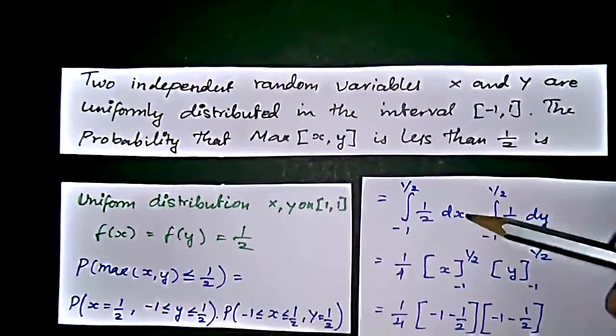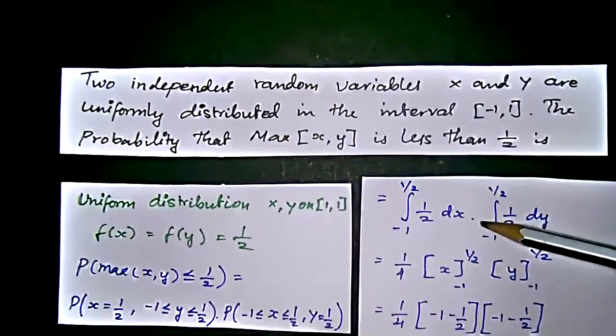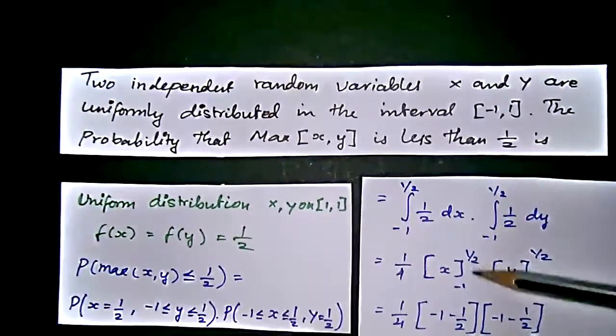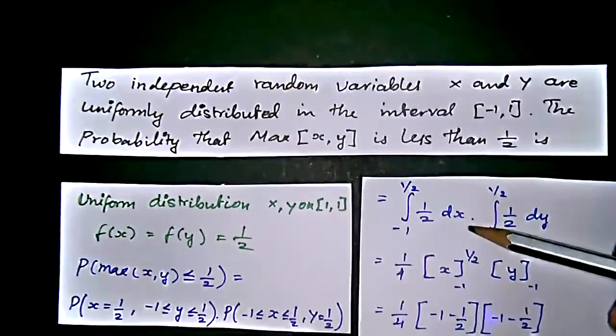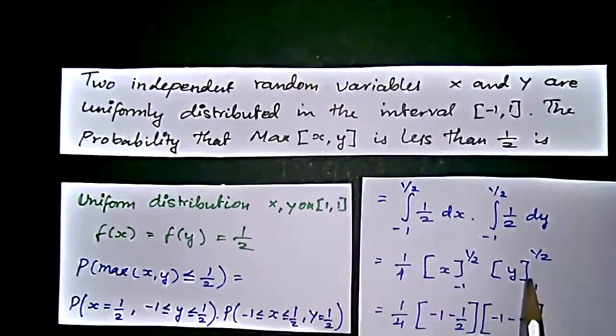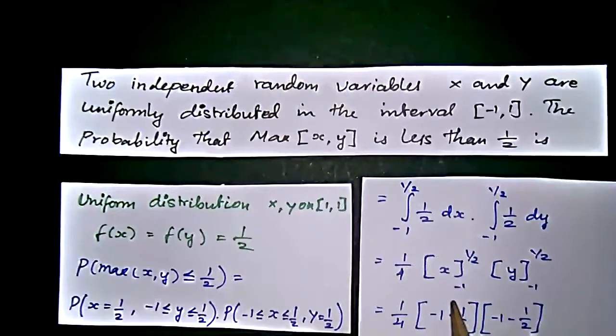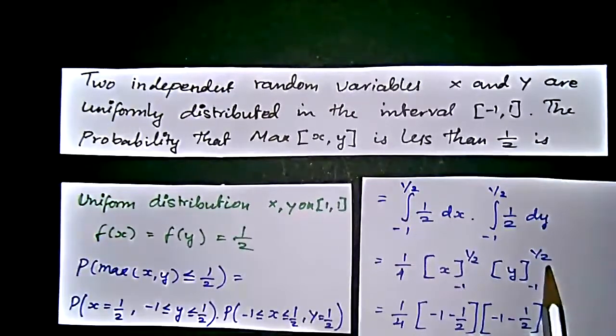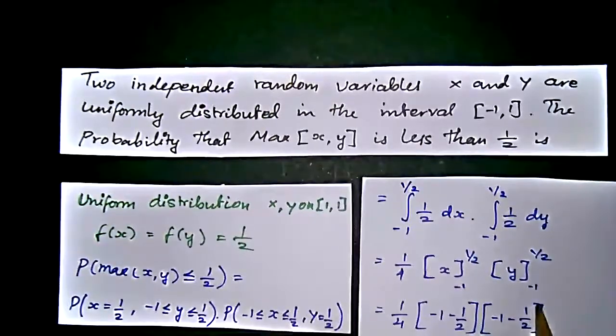Same interval but the variable gets changed to x and y. We are integrating dx and dy according to the limits. So we will get x upper limit 1 by 2 lower limit minus 1, multiple of y upper limit 1 by 2 lower limit minus 1.